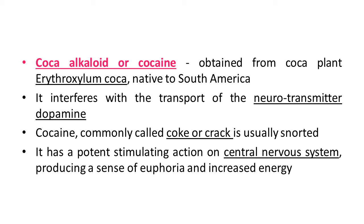Coca alkaloid or cocaine is one type of drug obtained from the coca plant, scientific name Erythroxylum coca, native to South America. Cocaine interferes with the transport of the neurotransmitter dopamine. Commonly called coke or crack, it is usually snorted. It has potent stimulating action on the CNS, producing a sense of euphoria and increased energy.